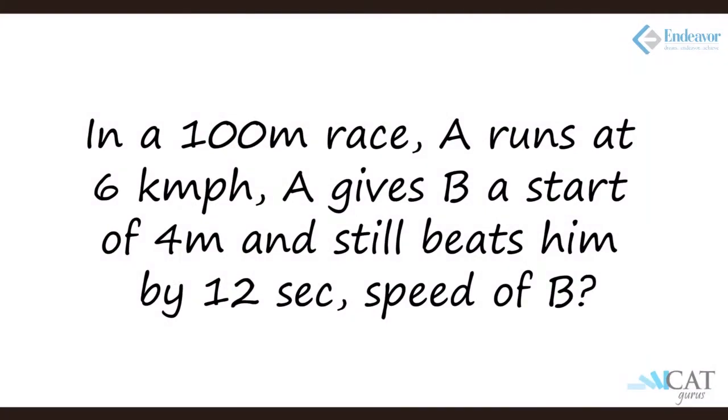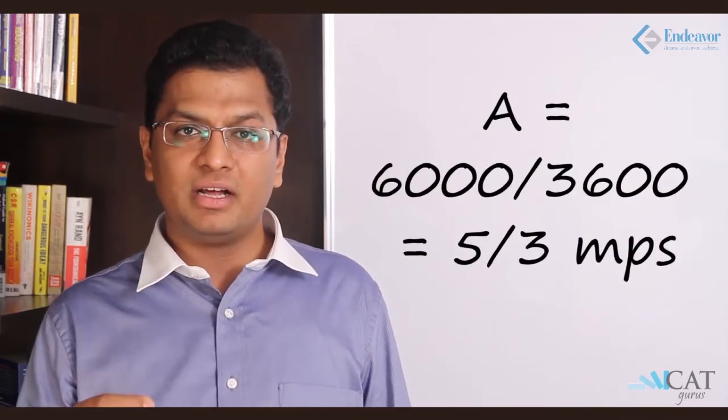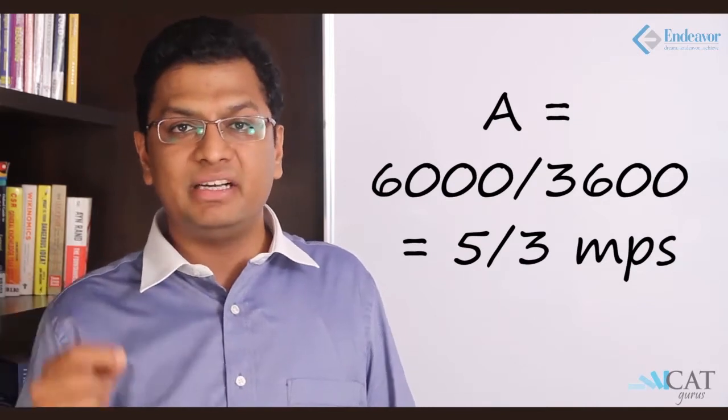Let us look at another question. In a 100 meter race A runs at 6 kilometers per hour and A gives B a start of 4 meters but still beats him by 12 seconds. What is the speed of B? Now A is covering 100 meters, B is covering 96 meters. So speed of A which is 6 kilometers per hour is converted to 5 by 3 meter per second.